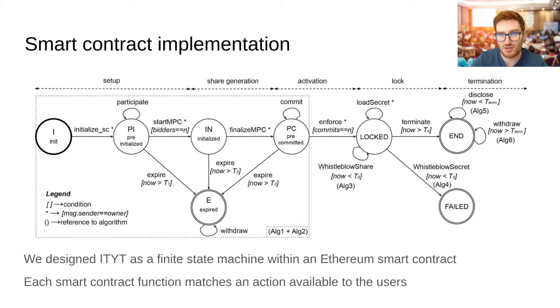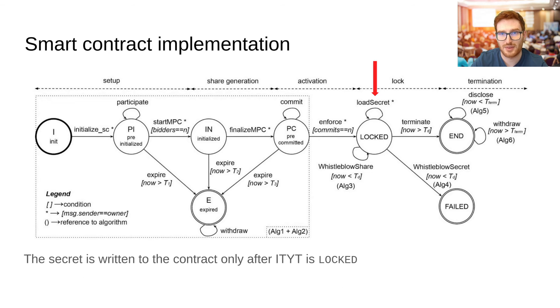Setup, in which the owner has to deploy the contract and the shareholders subscribe to it. Share generation, that involves off-chain operations to confidentially split the secret. These are operations that aren't directly performed by smart contract functions, and we are going to describe them in a moment. Then we have activation, in which the shareholders attest they have received their share and give their go-ahead. We have lock, in which the shareholders keep the shares confidential until the disclosure time, and finally there is termination, where the secret is disclosed. Please notice that the secret is written to the contract only after the ETYT instance is blocked.